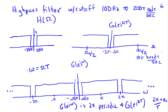In summary, if we have a sampling operation satisfying the conditions of the sampling theorem and ideal reconstruction, we can use a discrete-time filter to implement a continuous-time filter function. We've shown how to translate the requirements on the continuous-time filter to specifications on the discrete-time filter.